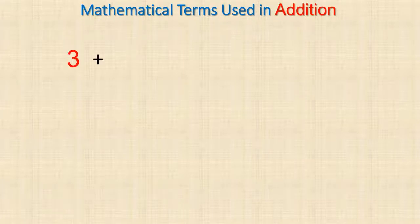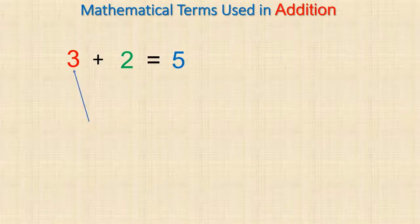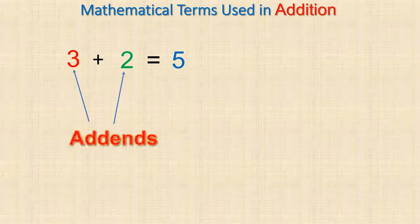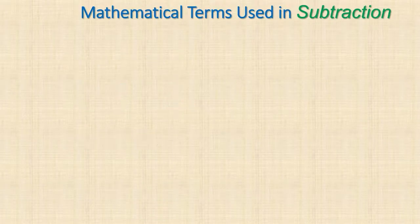We can write addition horizontally or vertically. In the horizontal way of writing addition, three plus two is equal to five. We still call three and two the addends, and five is the sum.